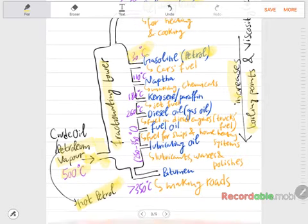But you don't need to memorize the numbers. You just need to know the different fractions, the different uses, and the order of the fractions. And the fact that the boiling point increases across the fractionating tower. The next fraction is naphtha. It is used for making chemicals. The next is kerosene or paraffin, and is used as jet fuel. The next one is diesel oil, or it's also known as gas oil, and it's used as a fuel in diesel engines. And these are usually the truck engines. Fuel oil, it is fuel for ships and home heating systems. Lubricating oil is used for lubricants, waxes, and polishes.